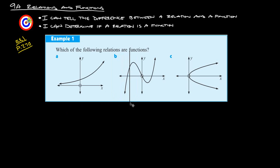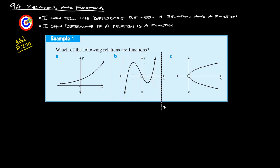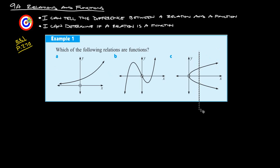For graph B, applying the vertical line shows no two points share the same vertical line, so B is also a function. For graph C, there are many spots where two different points share the same X value — the vertical line touches two spots at the same time. So graph C is not a function.